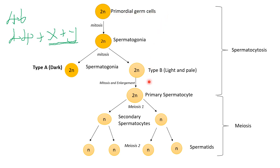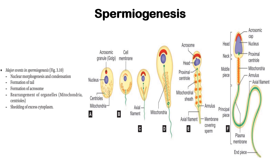To summarize: in spermatocytosis it was simply conversion of the primordial germ cells into primary spermatocytes; in meiosis it was division of the primary spermatocyte into spermatids. These spermatids are round cells with nuclei, mitochondria, centrosome, and almost all organelles needed, and they must now undergo spermiogenesis — which is simply the maturation of these cells.